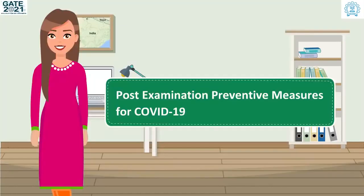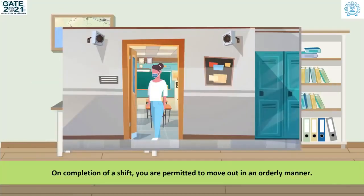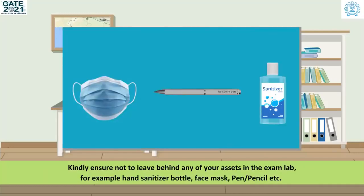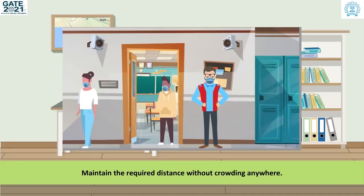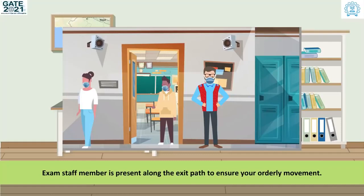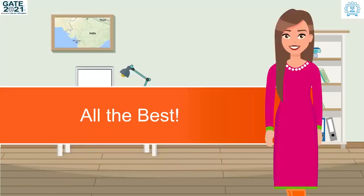Post-examination preventive measures for COVID-19: on completion of a shift, you are permitted to move out in an orderly manner. You can leave the exam lab only after the exam staff member permits you to leave. Kindly ensure not to leave behind any of your assets in the exam lab, such as hand sanitizer bottle, face mask, pen or pencil, etc. While leaving the exam lab, drop the admit card and scribble pad in a drop box at the exit. Maintain the required distance without crowding anywhere. Exam staff members are present along the exit path to ensure your orderly movement. All the best!